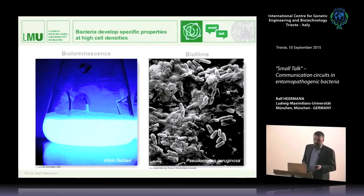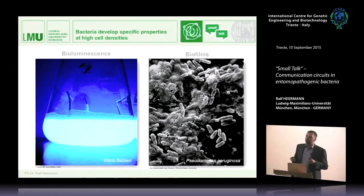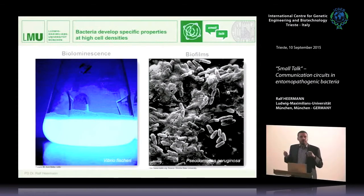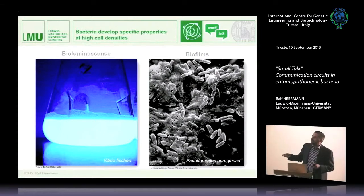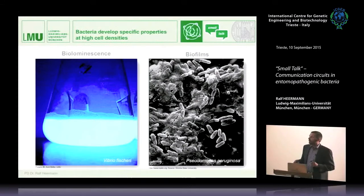It has been discovered, I think, 20 to 30 years ago that bacteria can produce specific phenotypic traits that they exhibit when they are in large numbers, but not when they are alone or just a few. One example, a well-studied organism, is the marine bacterium Vibrio fischeri, which produces light. It does not produce light when cell density is low, but only when they are a lot.